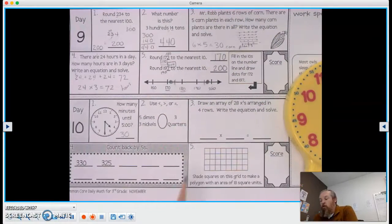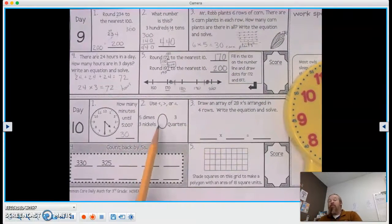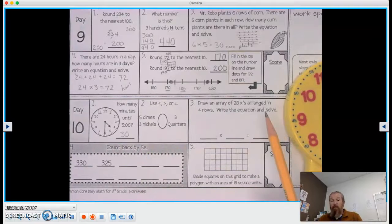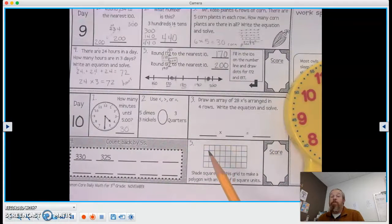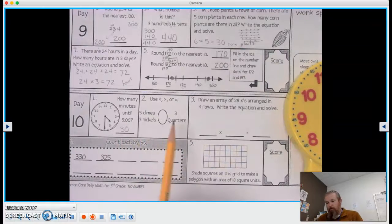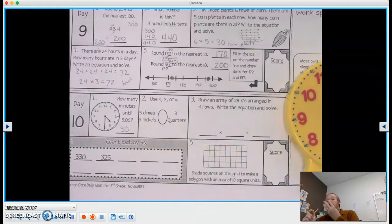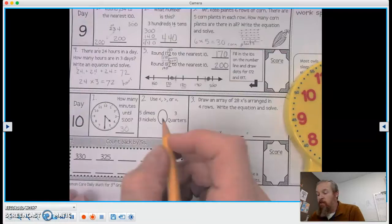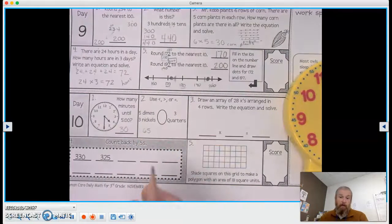Use less than, greater than, or equal to. So 5 dimes is like 5 tens, right? So 10, 20, 30, 40, 50. And then we can count by nickels because there were 5. So we're at 50, and then we can go 55, 60, 65. So on this side, we basically have 65 cents.